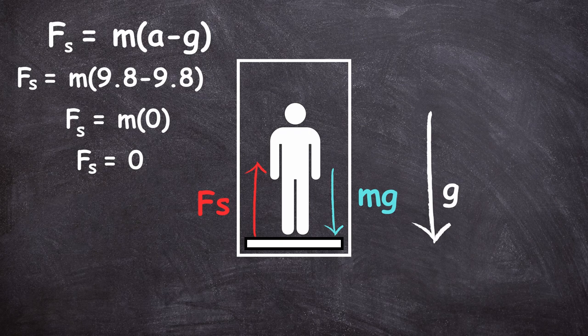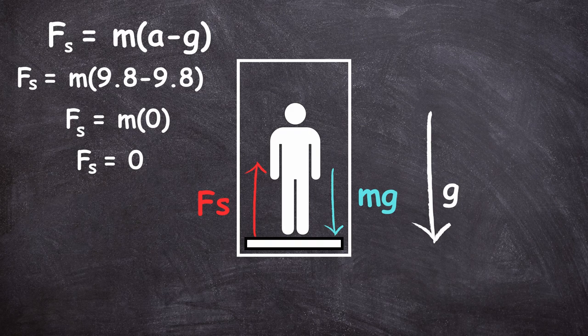Suppose suddenly the cable gets cut. The elevator has nothing linked to it and it's falling. Are there any forces acting upon you? No. Are there any forces on the bathroom scale? No — except for gravity. This means they are in free fall. The elevator, you, and the bathroom scale are all going down at −9.8 m/s². If you plug this into the equation, you get M(g − A), and substituting A = g, you get M(g − g) = 0. So the force you feel is zero — you don't feel your own weight.